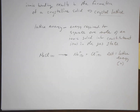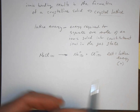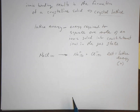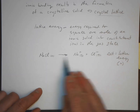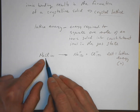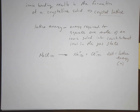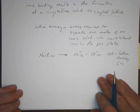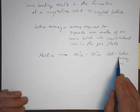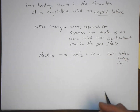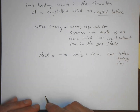The lattice energy is of course positive, because it takes energy to break down this structure — there are attractions between the positive and negative ions. It's actually quite difficult to measure this lattice energy experimentally; it's difficult to do this experiment of taking sodium chloride solid and making sodium ions and chloride ions in the gas state.